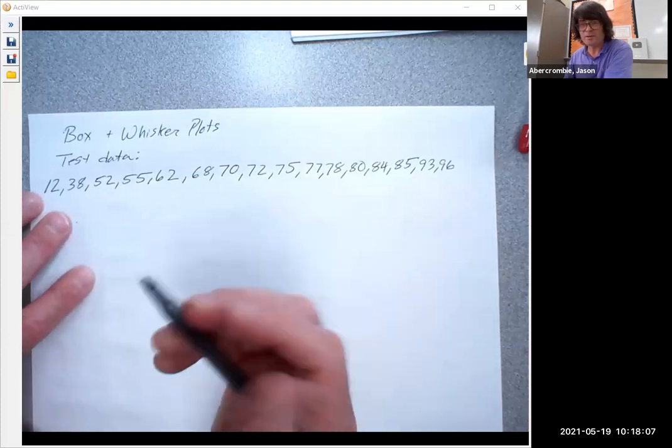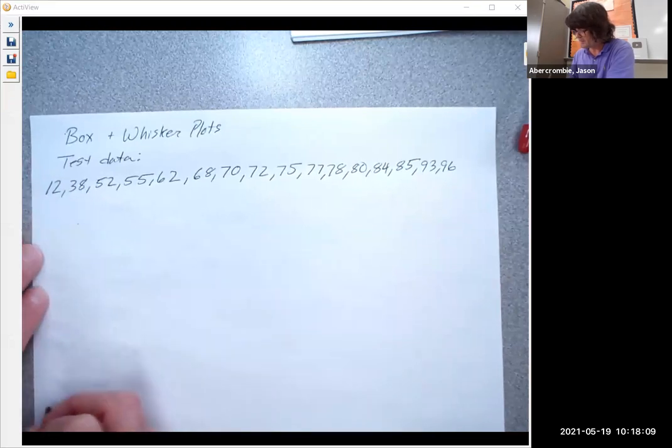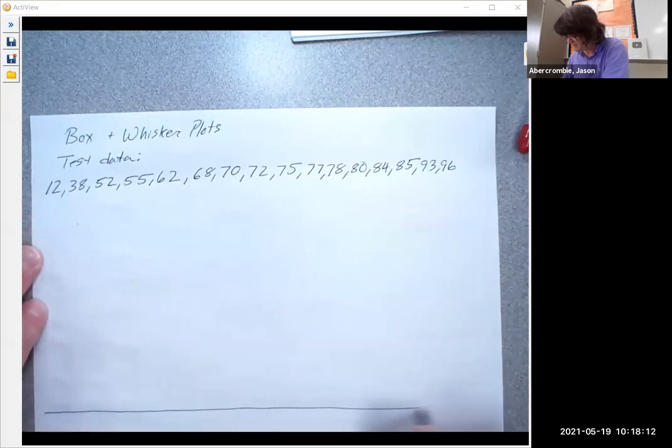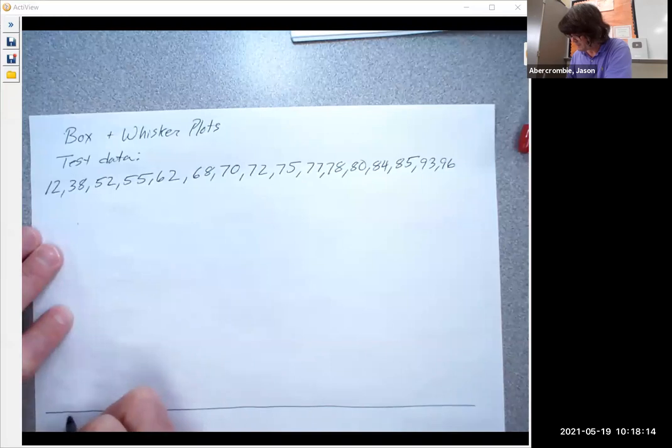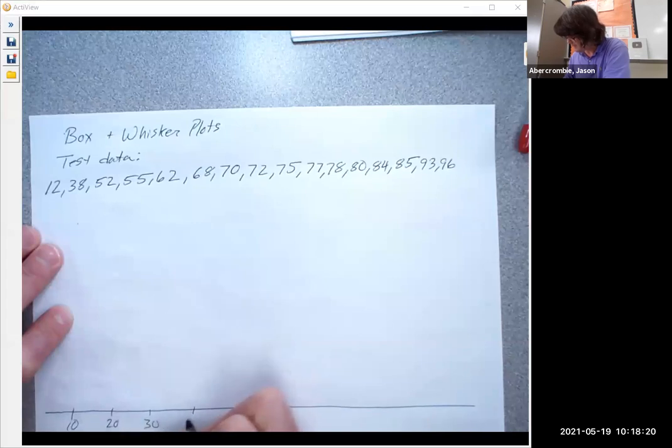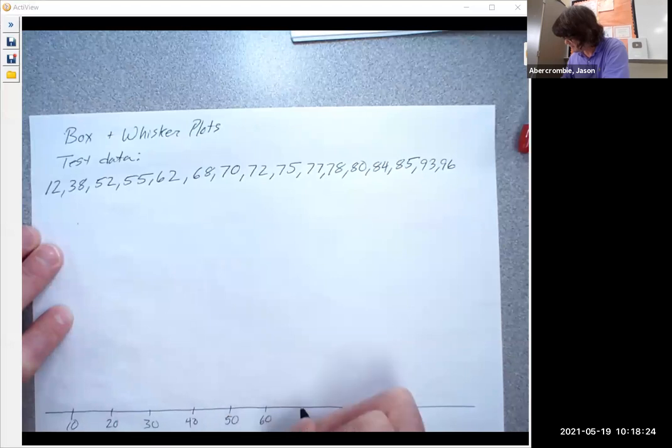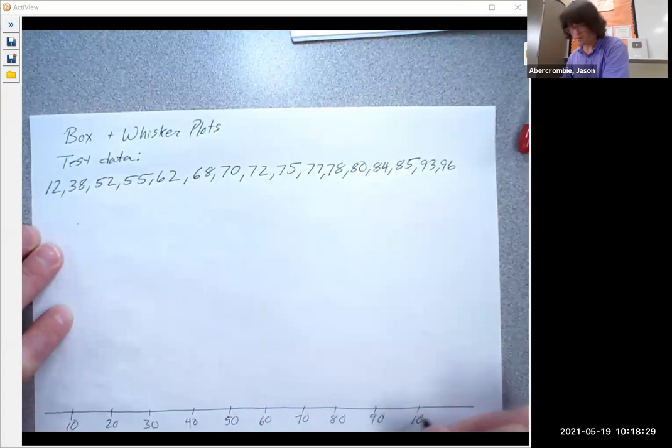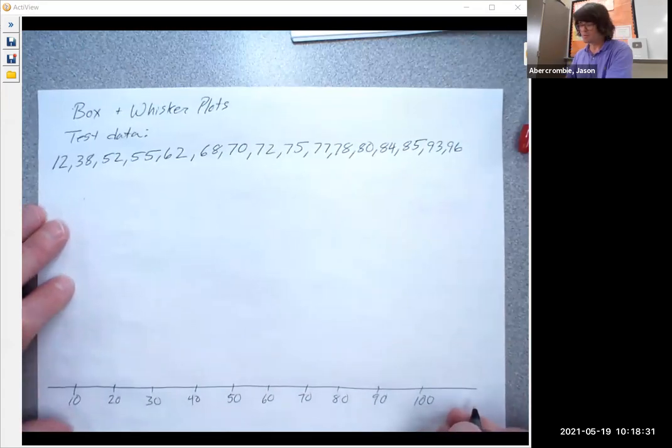Also, if you really want to make a box and whisker plot, it must be on a number line, so we have context. I'm just going to make a number line here so far. 10, 20, 30... otherwise, I don't know what the lines mean. 50, 60, 70, 80, 90, 100. So you really need a scale for your box and whisker plot.